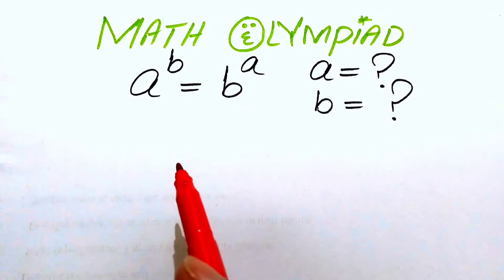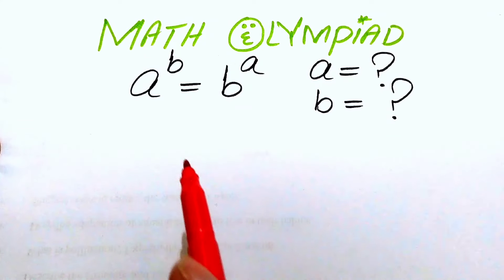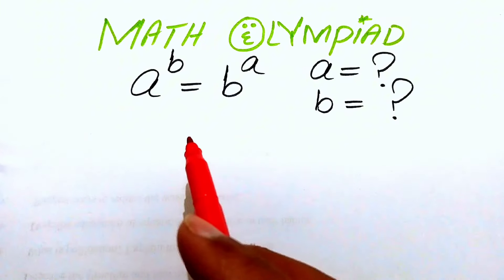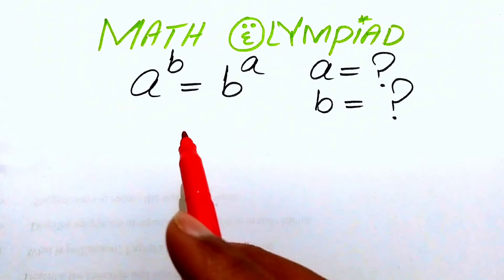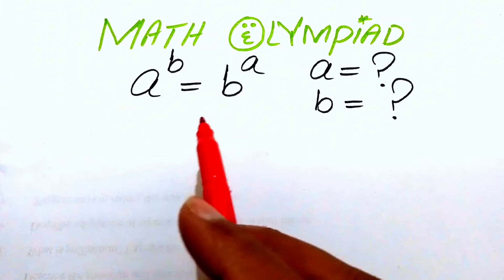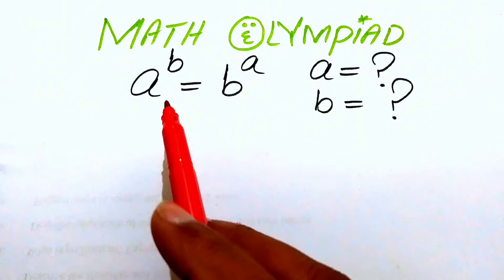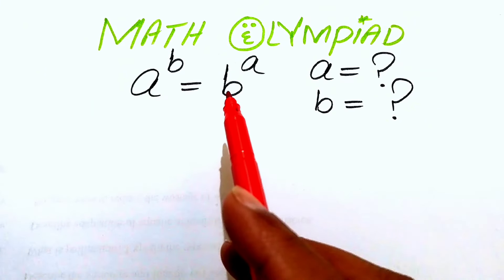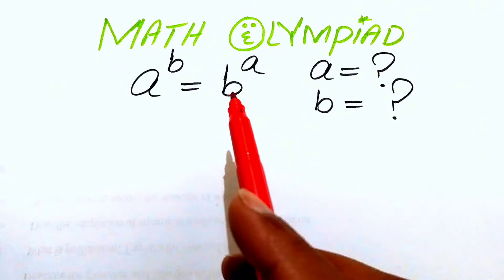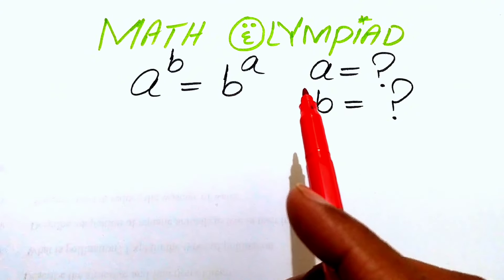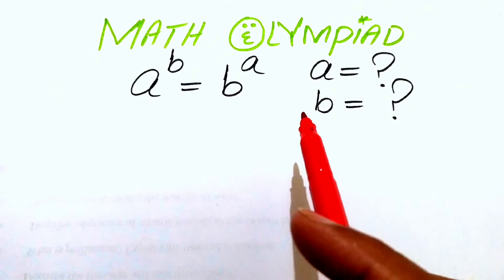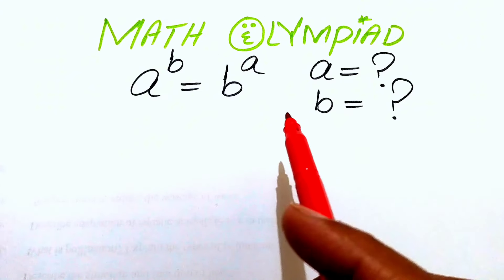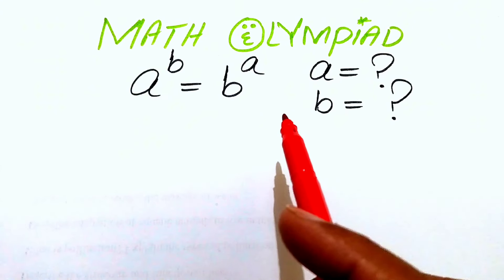Hello everyone, welcome back to the Map of Mathematics. In this video we are going to solve this nice math algebraic challenge: a to the power of b equals b to the power of a, and here we find the values of a and b.